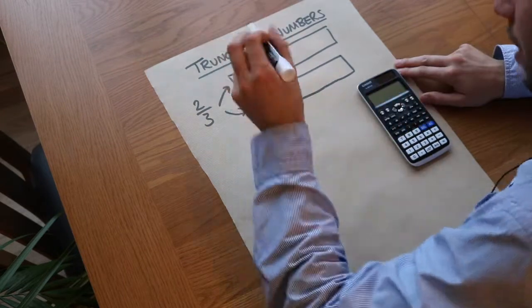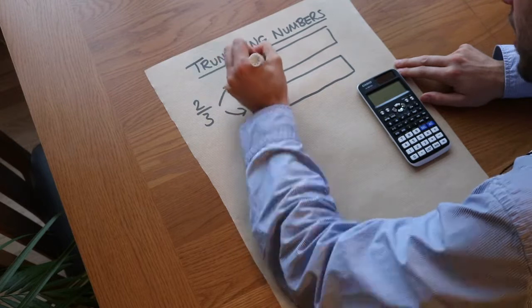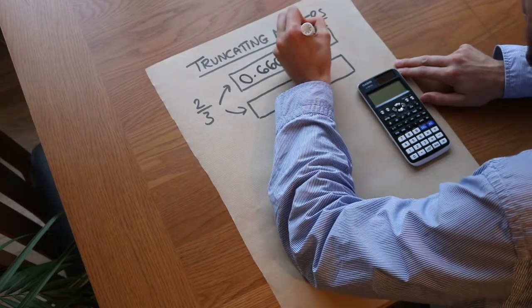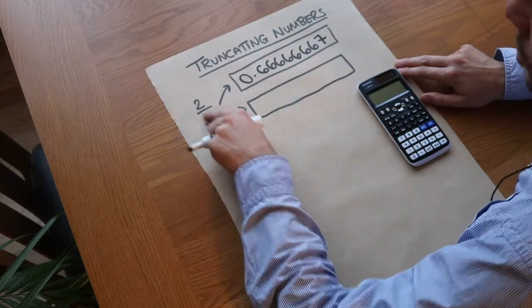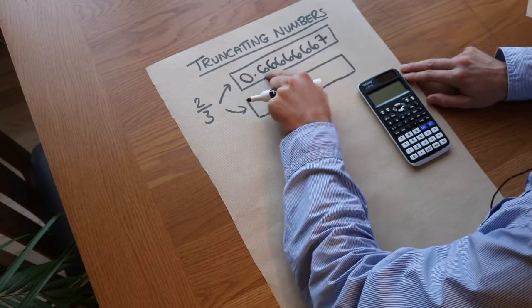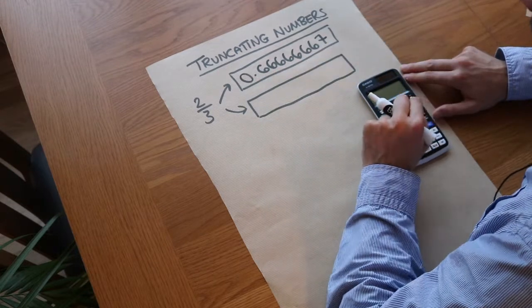In all recent calculators, it would give you 0.666666 lots of sixes and then it finishes with a seven. You might know that two-thirds means 0.6 recurring, so it's zero point and then an infinite number of sixes.